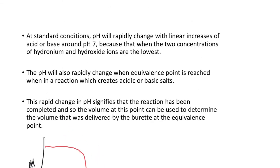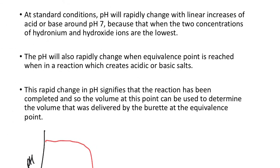At standard conditions, pH will rapidly change with linear increases of acid and base around pH 7, because that's when the concentrations of hydronium and hydroxide ions are the lowest — so adding a little bit causes a reasonably large change in pH. The pH will rapidly change at the equivalence point, and this rapid change signifies that the reaction has been completed. The volume at this point can be used to determine the volume delivered by the burette at the equivalence point.